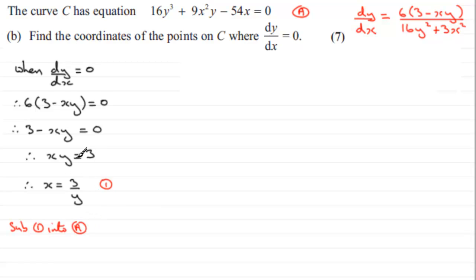I'm going with x equals 3 over y. It's going to give us 16y³ plus, and we've got 9 times x². If I square this for x, it's going to be 3², which is 9 over y². So we've got 9 times 9 over y², and that's multiplied by this other y here. Then we've got minus 54x, so minus 54 multiplied by 3 over y. And we're told this will equal 0.